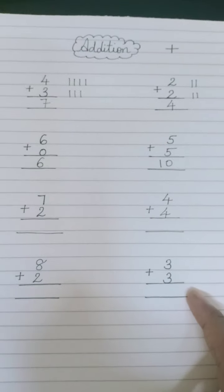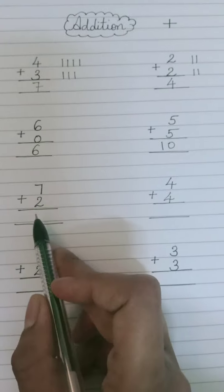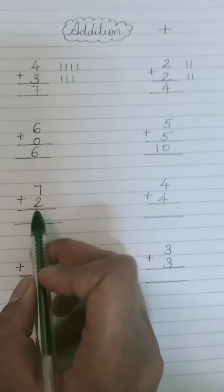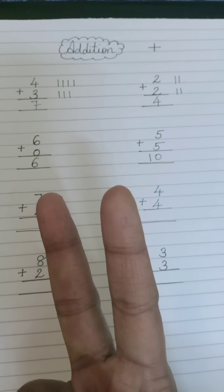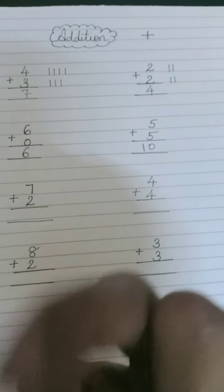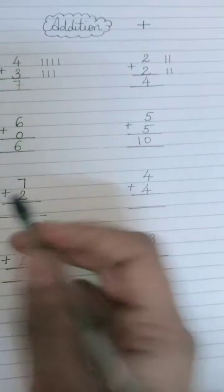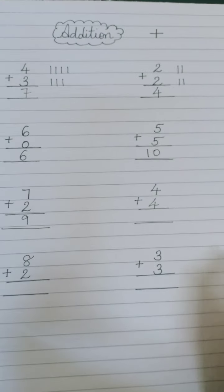Come to the next example, that is seven plus two. Look for the bigger number - that is number seven. So you will keep seven in your mind, and then take out two fingers. After seven you will count: eight, nine. Like this we got the answer nine. Now let's do the next one.